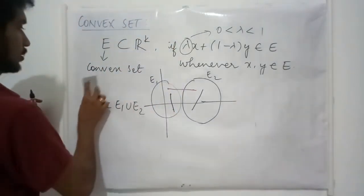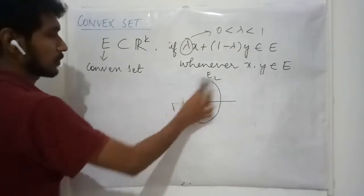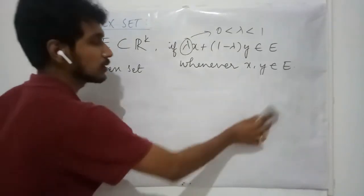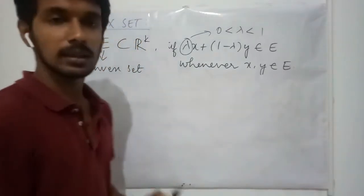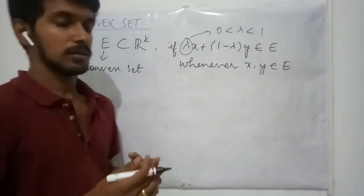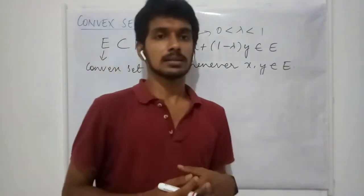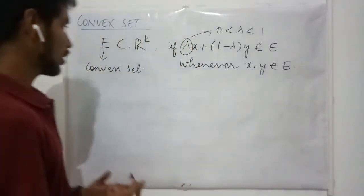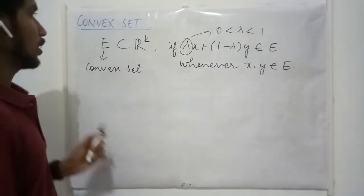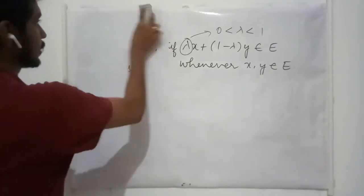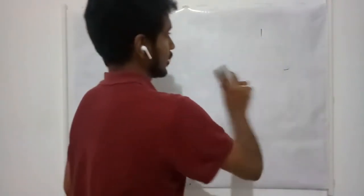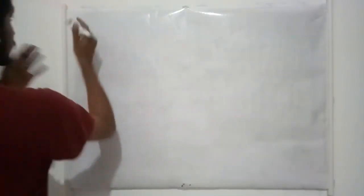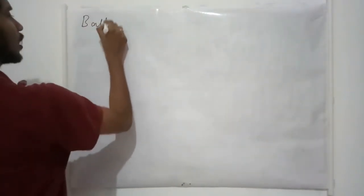From this, can you tell me what are all the possible convex sets in R3? Yes — it is cuboids and spheres. Now we are going to prove a result on convex sets: that balls are convex.